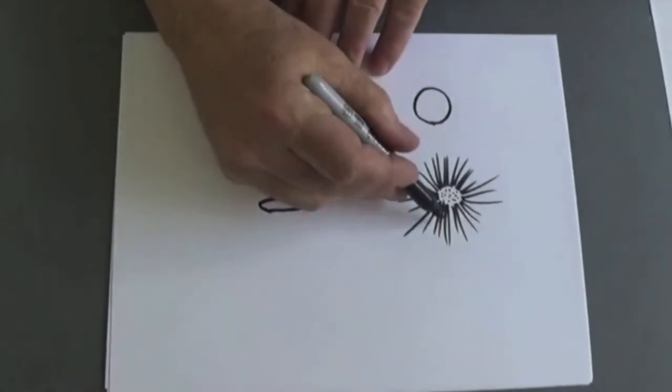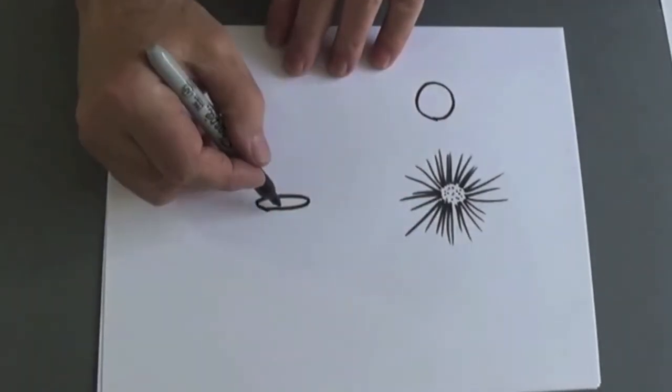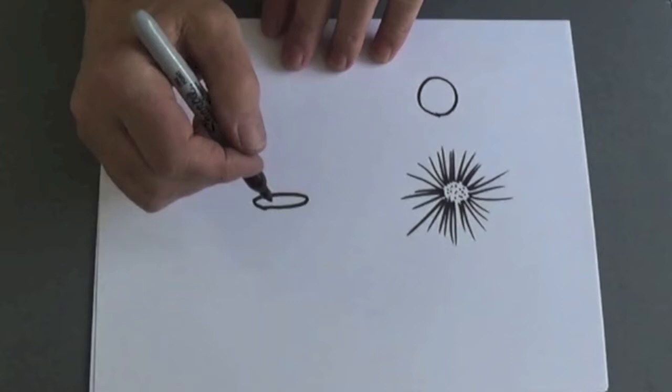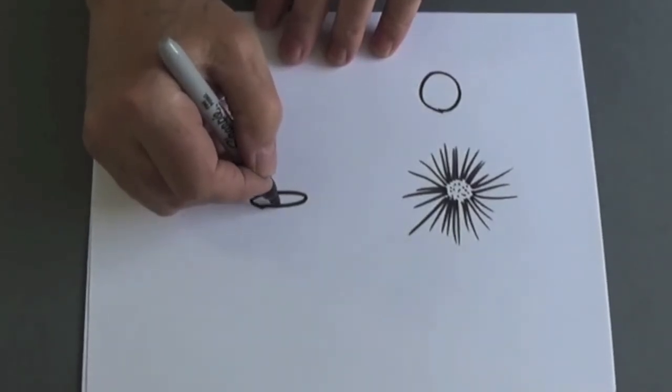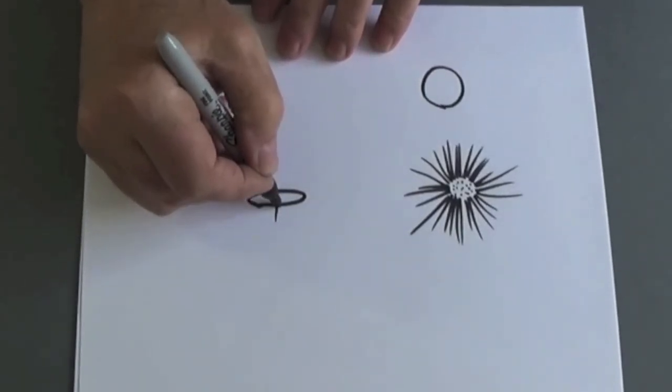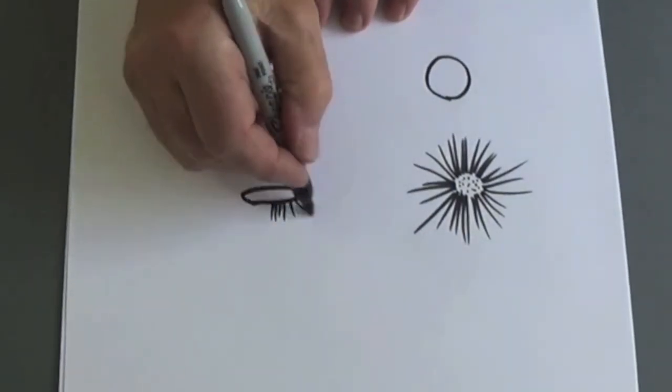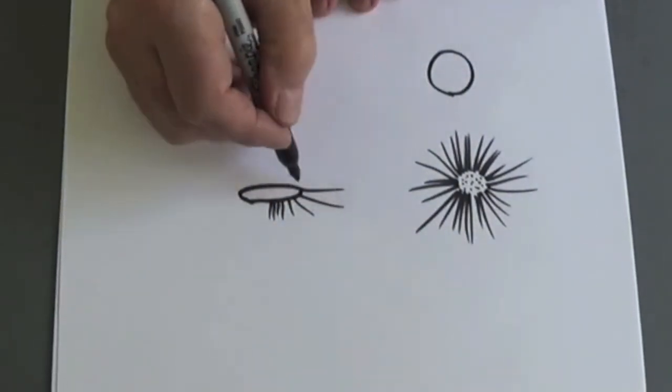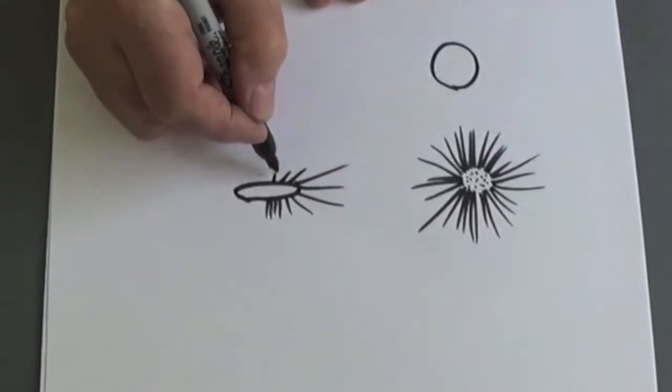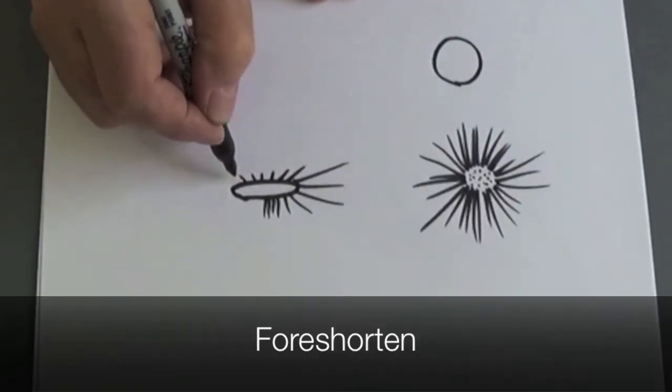And the petals that are closest to you are going to be shorter. See? And then as we get to the side, they get longer. This is to create what's called a foreshortened image of your flower.